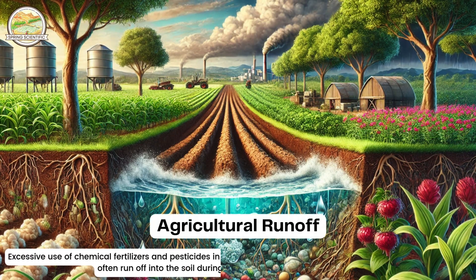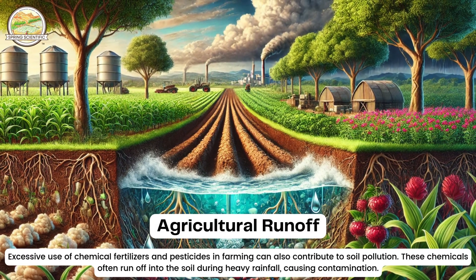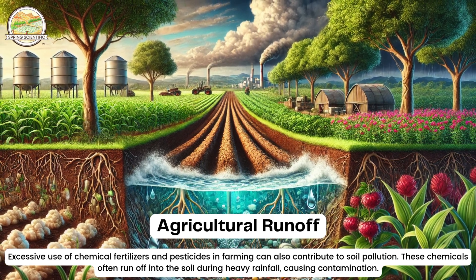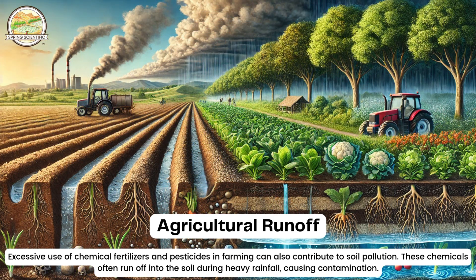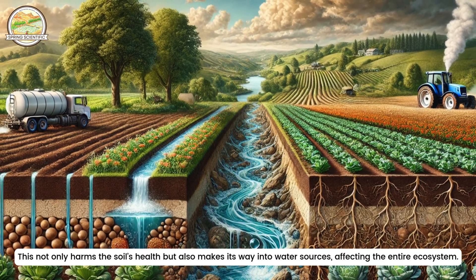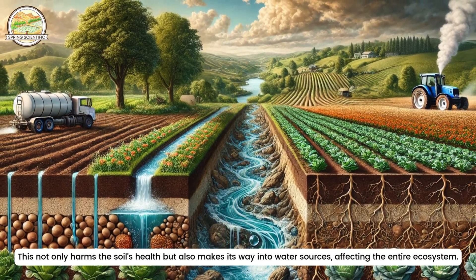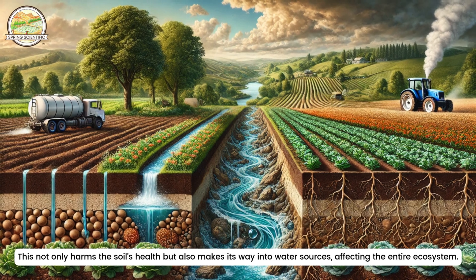The second source is agricultural runoff. Excessive use of chemical fertilizers and pesticides in farming can also contribute to soil pollution. These chemicals often run off into the soil during heavy rainfall, causing contamination. This not only harms the soil's health, but also makes its way into water sources, affecting the entire ecosystem.